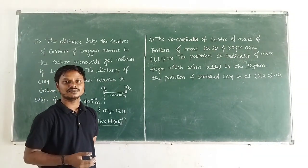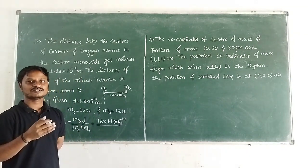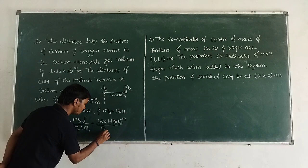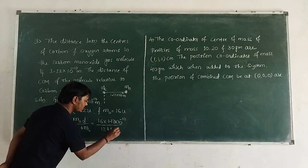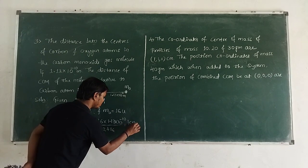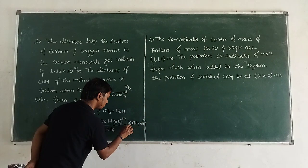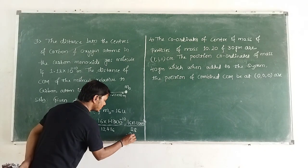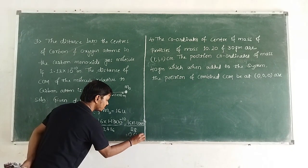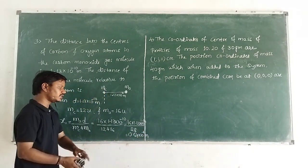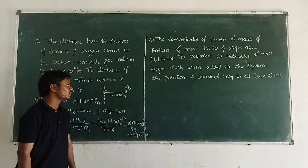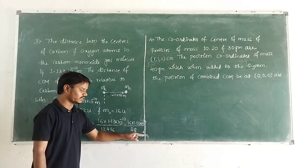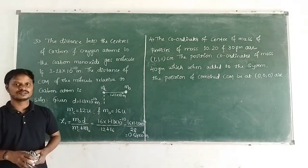Which is the system here? The carbon monoxide molecule is the system, because it contains the carbon atom and the oxygen atom. Then, mass of carbon is 12 and mass of oxygen is 16. So it is 16 × 1.13 × 10⁻¹⁰ divided by (12 + 16), which is 28. On solving this, we get the answer: 0.64 × 10⁻¹⁰ meter. The position of the center of mass relative to carbon is 0.64 × 10⁻¹⁰ meter. This is the solution for the third question.